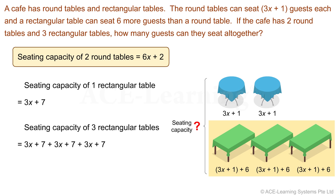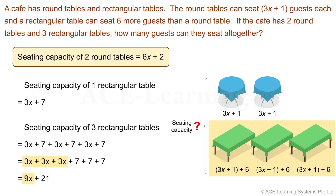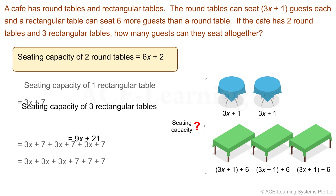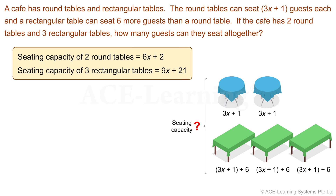Now let's simplify this expression. Gather all the terms in x, then all the numbers. The terms in x add up to 9x, and the numbers add up to 21. Next, we need to find the sum of the seating capacities of the tables. The rectangular tables can seat 9x plus 21 guests.